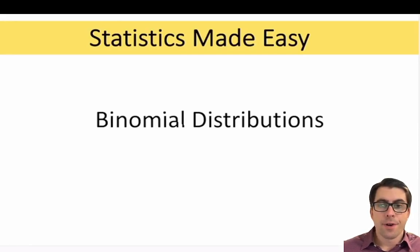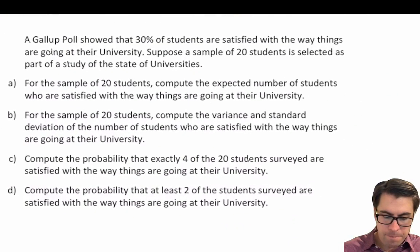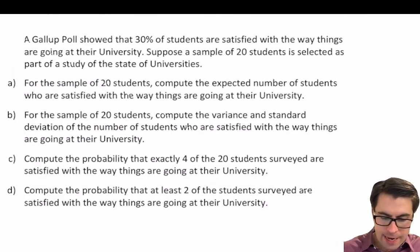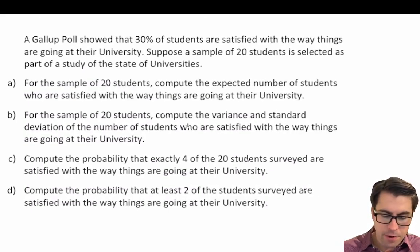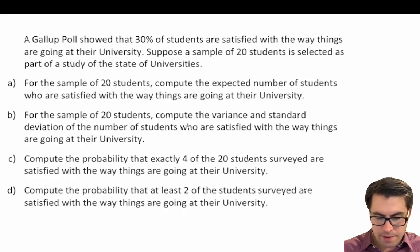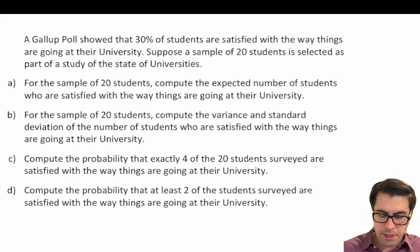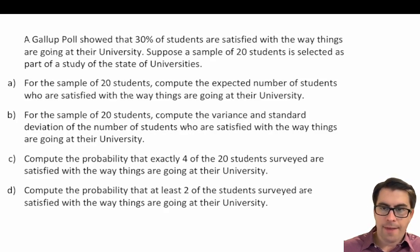In this video we're going to continue our discussion of binomial distributions with a few worked examples. A Gallup poll showed that 30% of students are satisfied with the way things are going at their university. Suppose a sample of 20 students is selected as part of the study of the state of universities. For the sample of 20 students, compute the expected number of students who are satisfied with the way things are going at their university.